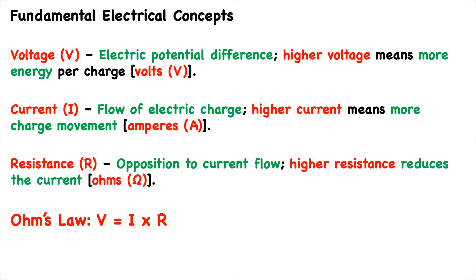Then we have the current, I, and the current is the flow of electric charge. You can think of the voltage as what provides the energy to achieve the flow of electric charge. The higher the current, the more charge movement, and the current is expressed in amperes.